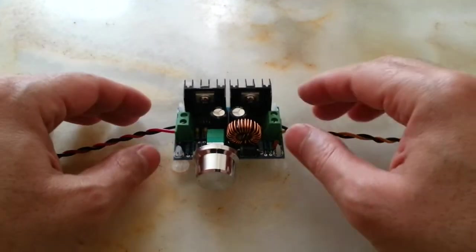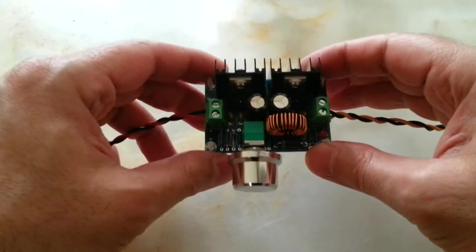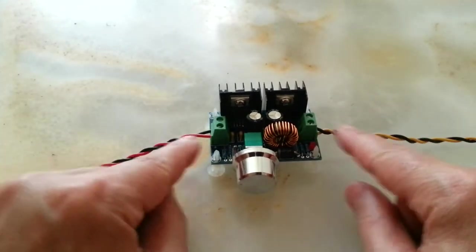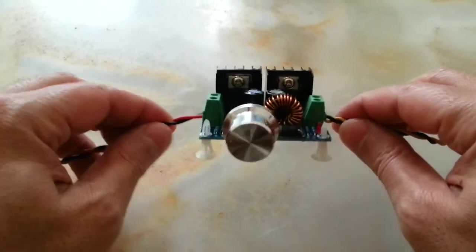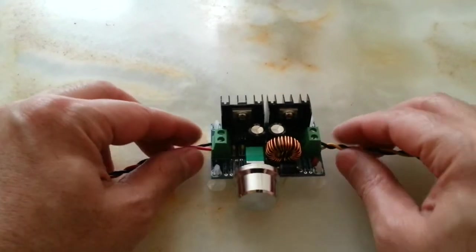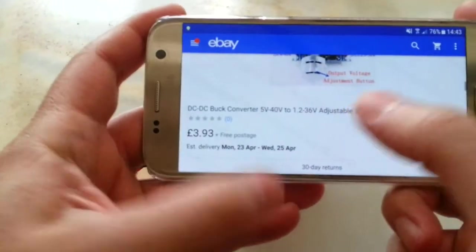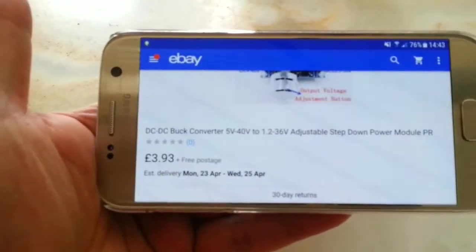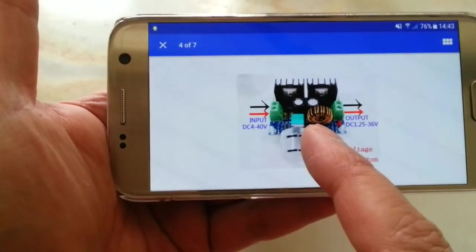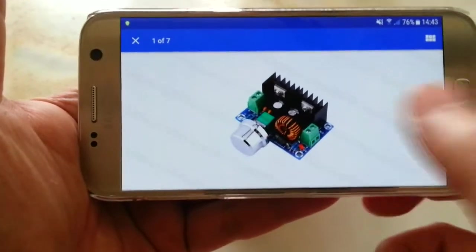Hi everyone, this is a video about this step-down buck converter which comes without these cables obviously and with this huge knob. The price of this was 393.